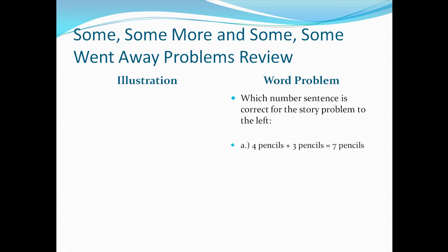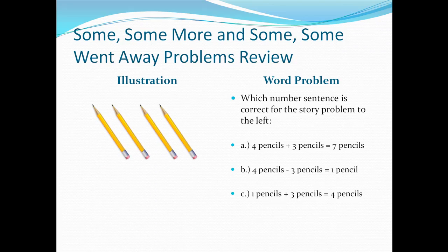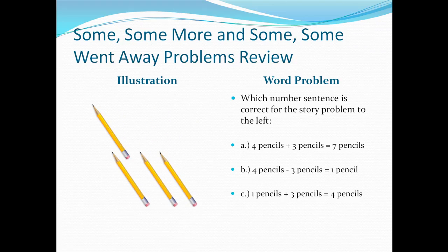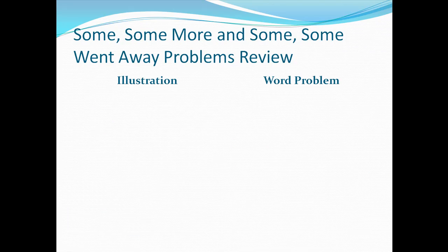Which number sentence is correct? A: Four pencils plus three pencils equals seven pencils. B: Four pencils minus three pencils equals one pencil. Or C: One pencil plus three pencils equals four pencils. Watch both parts of the illustration, then pause the video and make your answer choice. The correct answer is B: Four pencils minus three pencils equals one pencil.